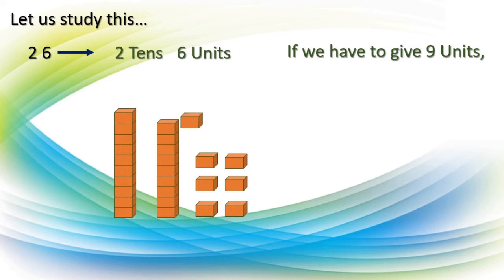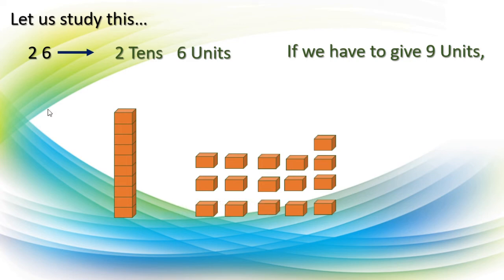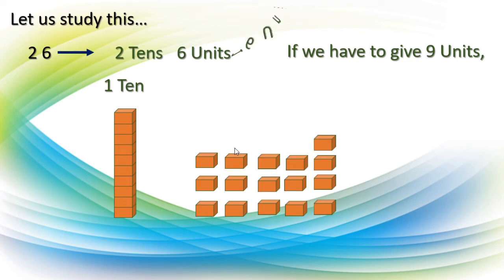We will untie this ten. We are separating the 10 units from one ten. Now how many tens remain? Only one ten remained. And how many units? 10 plus 6 — these 10 and these 6 — altogether we got 16 units. We untied this ten because we want to give 9 units to our friend. Now from 16 we can give 9 easily.